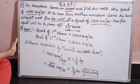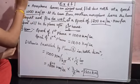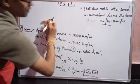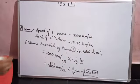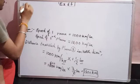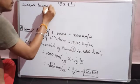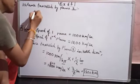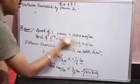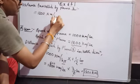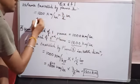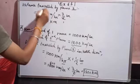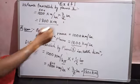Now for the second plane: distance traveled by plane two is given by the same formula — speed into time. The speed of the second plane is 1200 kilometers per hour, and the time is three by two hours, giving us 1800 kilometers. This is the distance traveled by the second plane in the west direction.